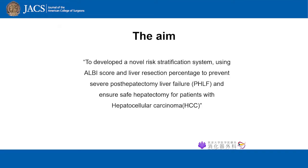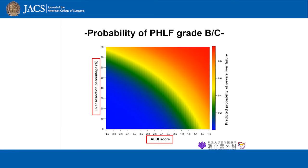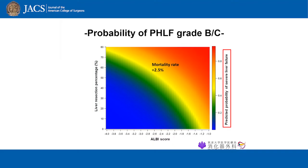This heat map was made from 361 HCC patients who received partial liver resection in our institute. 39 patients experienced PHLF grade B and C, and two of them died. This heat map indicates probability of grade B and C PHLF occurrence corresponded to each patient's preoperative ALB score and liver resection percentage. The blue color indicates grade B and C PHLF occurrence rate of less than 10%, and red color higher than 90%.